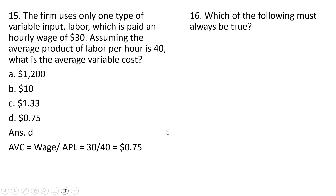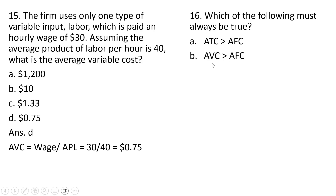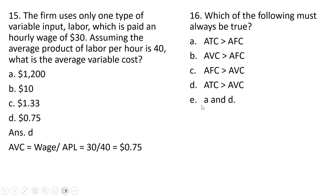Question 16. Which of the following must always be true? Average total cost is greater than average fixed cost — that is true. Average variable cost is greater than average variable cost — that is not necessarily true. Average fixed cost is greater than average variable cost — that is not necessarily true. Average total cost is greater than average variable cost — that is true. So the correct answer is A and D.